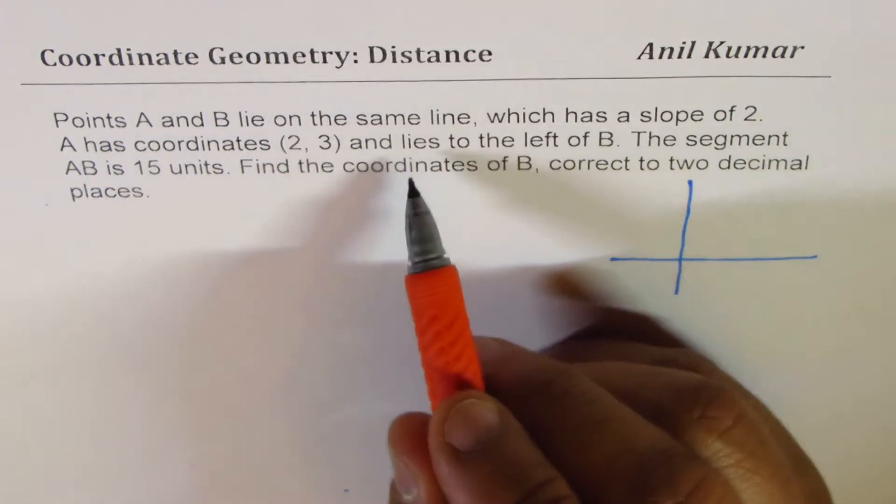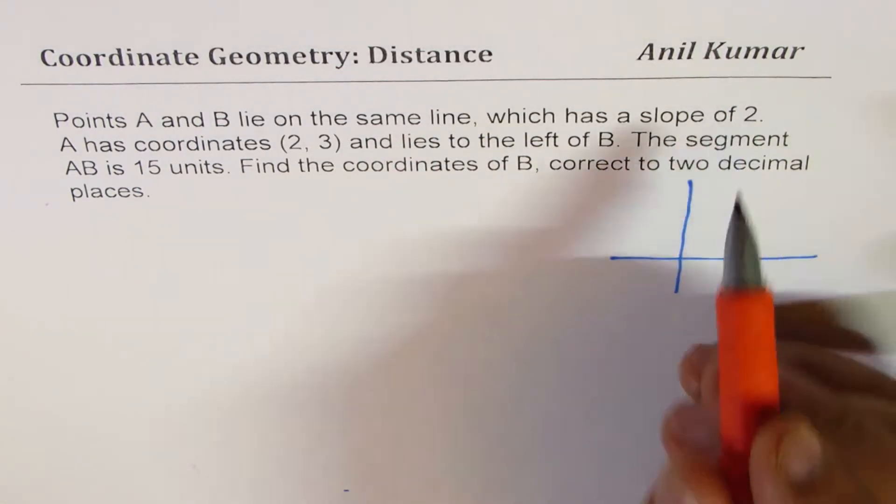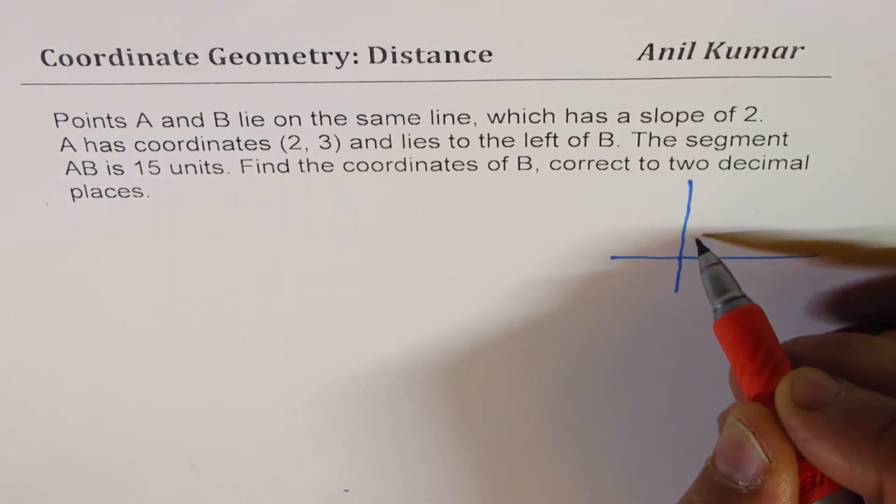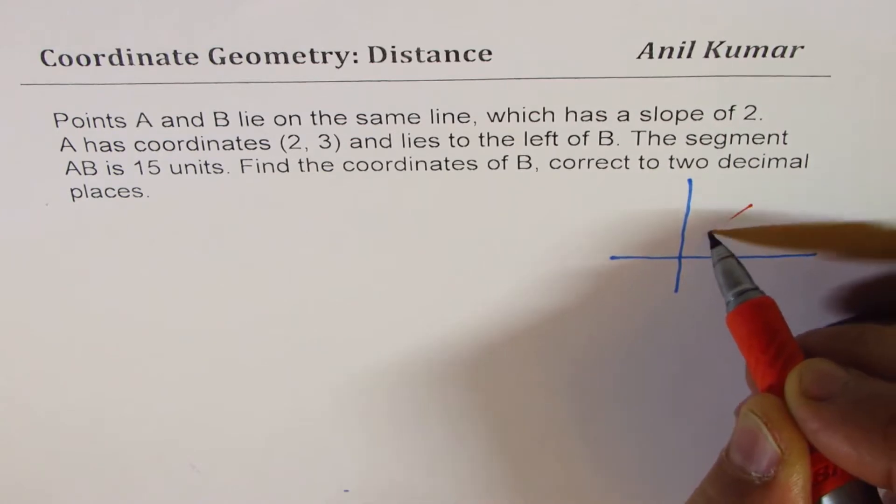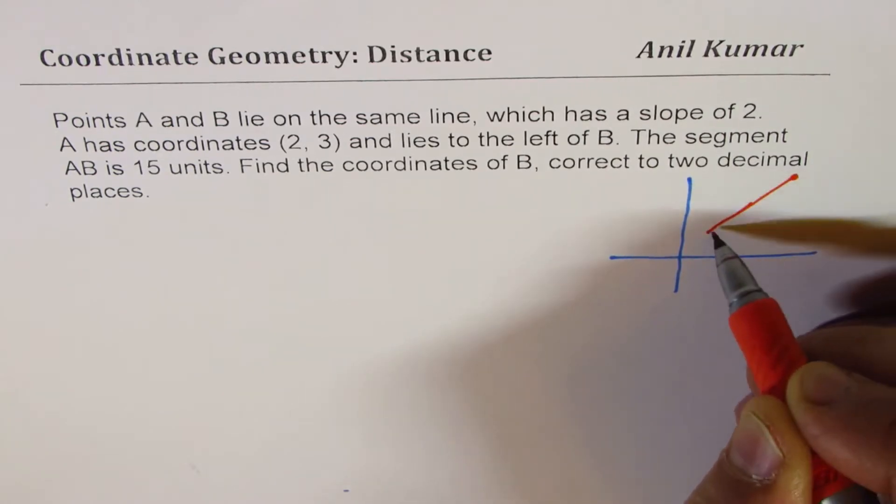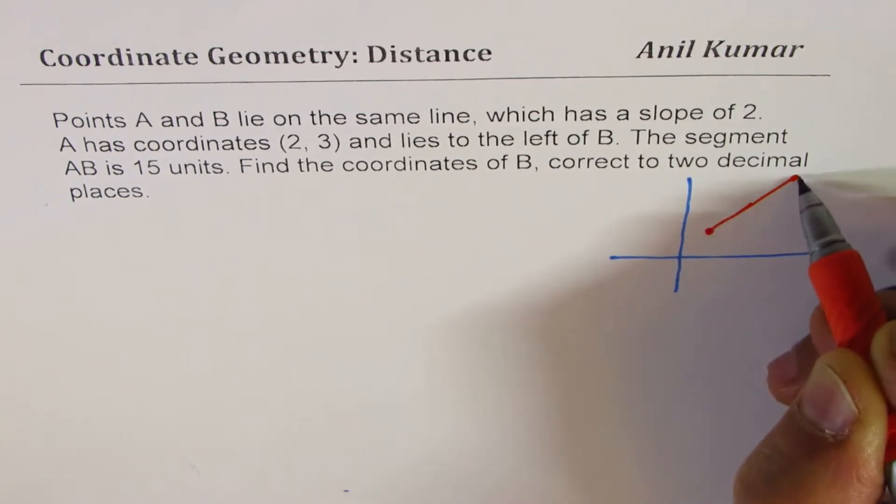A has coordinate (2, 3) and the line has a slope of 2. So, it is kind of going up, right? So, we can say it is going up like this. So, on this line, these are my points.